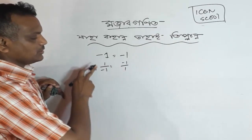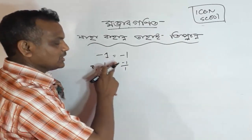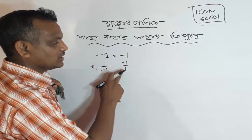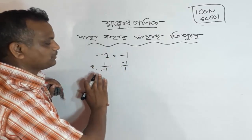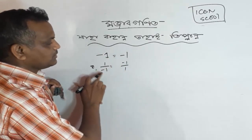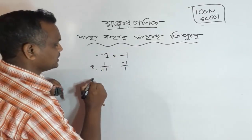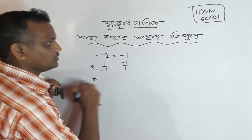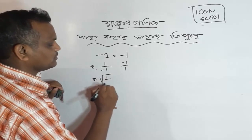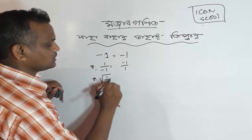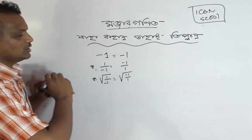If you have minus 1, then minus 1. If you have minus 1, then minus 1. Therefore, I'm going to change this. This is minus 1, this is minus 1. Now, what is this? I'm going to write minus 1, minus 1, and minus 1. This is minus 1.